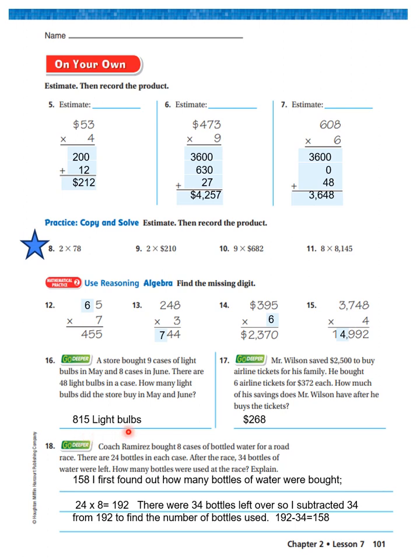Okay, that was a two-step problem. All right, Mr. Wilson saved $2,500 to buy airline tickets for his family. He bought six airline tickets for $372 each. How much of his savings does Mr. Wilson have after he buys the tickets? Well, you're going to say six times 372. Use the distributive property. Subtract that answer from $2,500 and you're going to get the answer of $268. So first, I had to take 372 times six, and I did it through the distributive property. I subtracted it from $2,500 and I got $268.